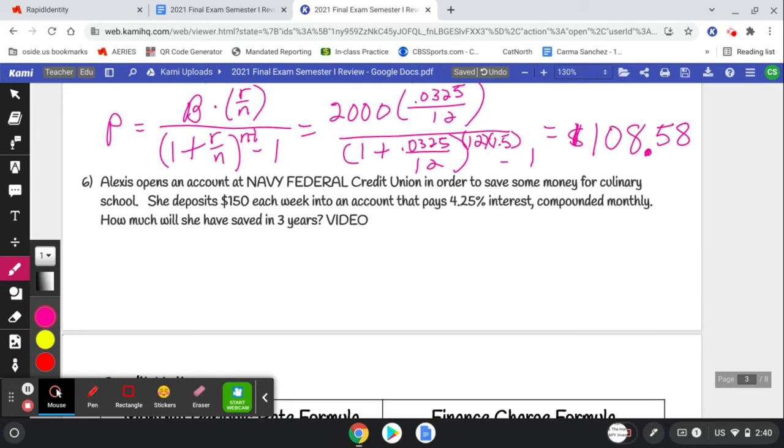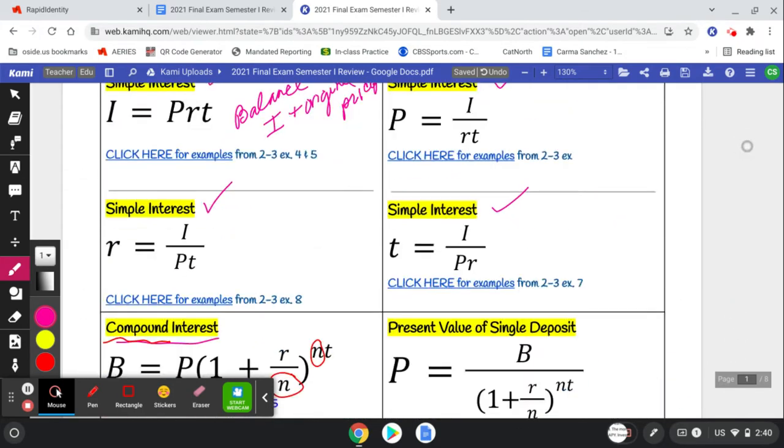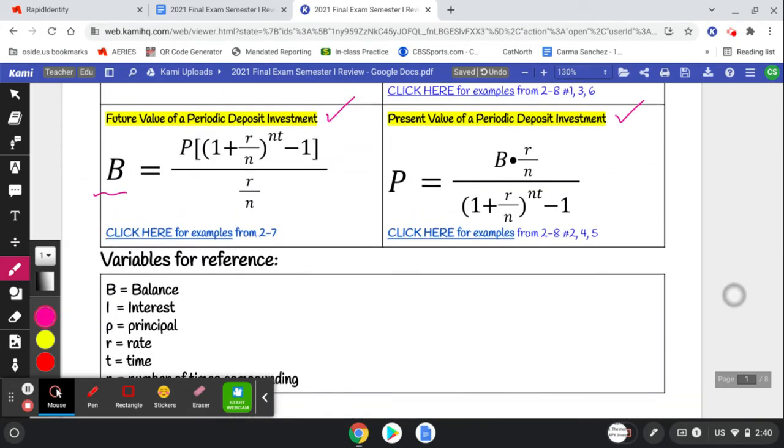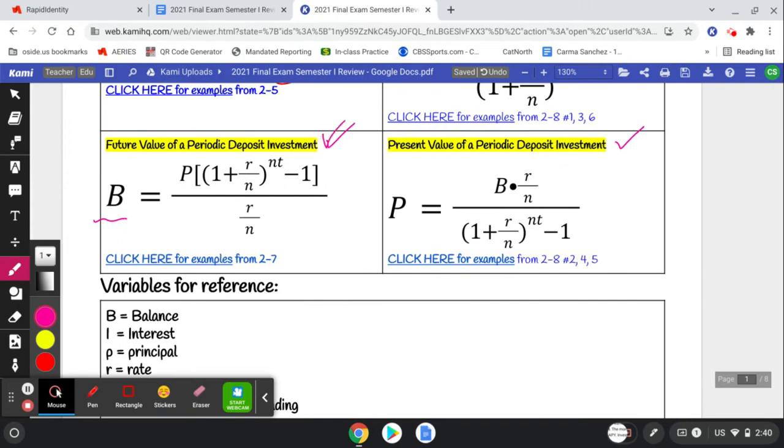Last but not least, Alexis opens an account at Navy Federal Credit Union in order to save some money for culinary school. She deposits $150 each week into an account that pays 4.25% interest compounded monthly. How much will she save in three years? So this time it says another periodic deposit, so we know we're looking at these again, but this time it asks for how much, a balance. So this time we're going to use the B equals, and this has a double parentheses in it. Be careful.